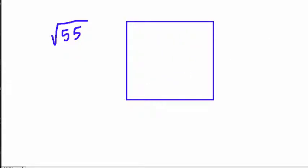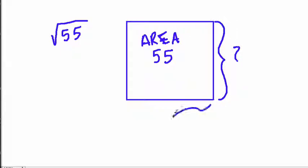Using that idea, let's look at the next example, which is the square root of 55. This one's a lot tougher because if we have a square with an area of 55 - because it has to be a square, not a rectangle - we're trying to find a number multiplied by itself that gives us 55. Let's try that and see what happens.